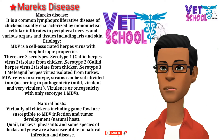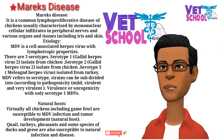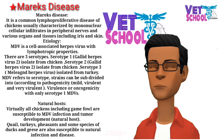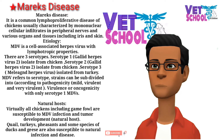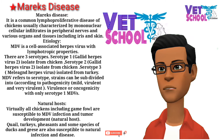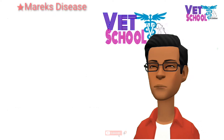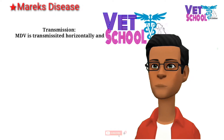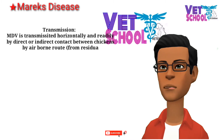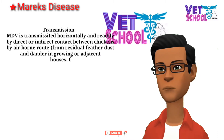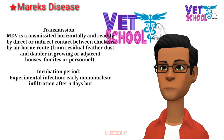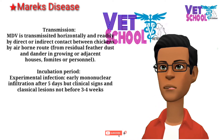Virulence or oncogenicity is only associated with serotype 1 MDVs. Natural hosts include virtually all chickens including game fowl, which are susceptible to MDV infection and tumor development. Quail, turkeys, pheasants, and some species of ducks and peas are also susceptible to natural infection and disease. MDV is transmitted horizontally and readily by direct or indirect contact between chickens.